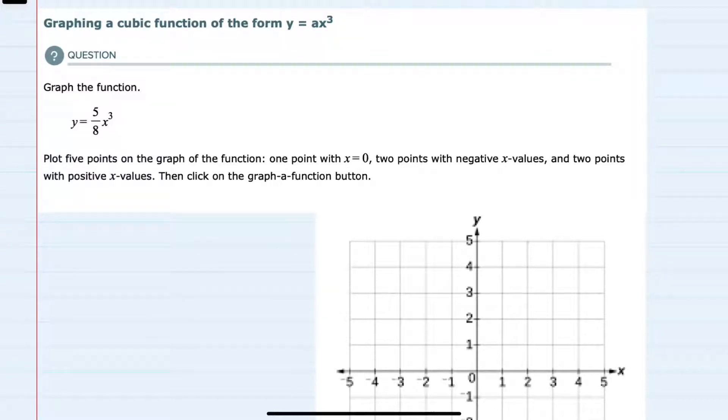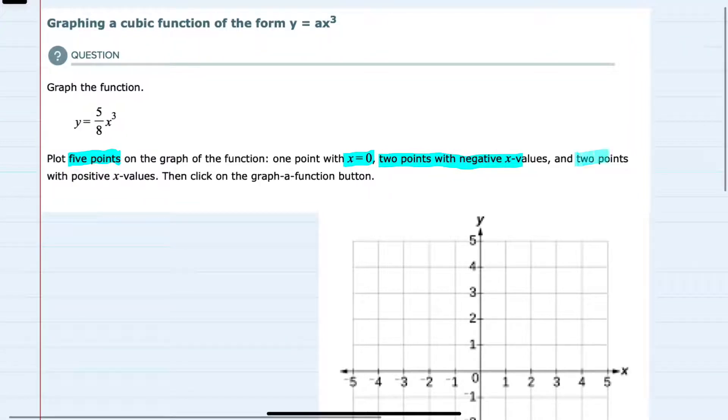In this video I'll be helping you with the Alex problem type called graphing a cubic function in the form y equals a x cubed. We're asked to graph by finding five points: one where x equals 0, two points with negative x values, and two points with positive x values.